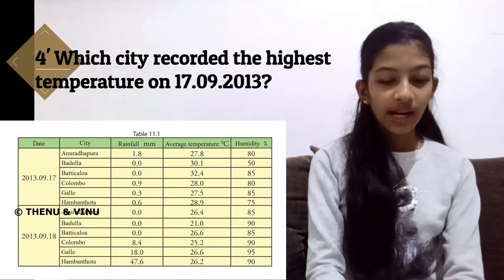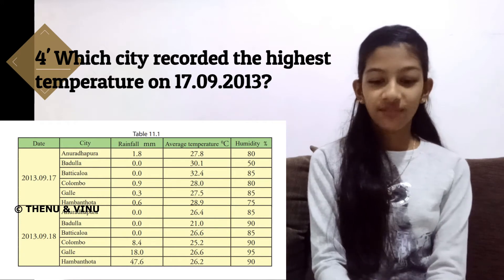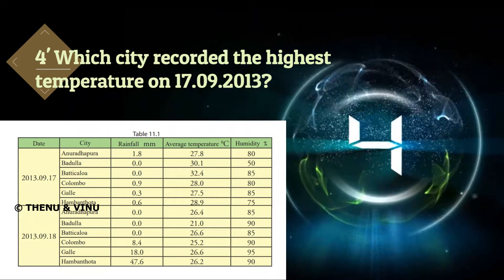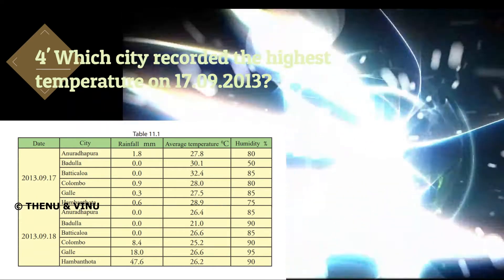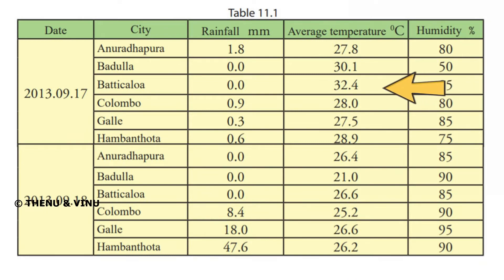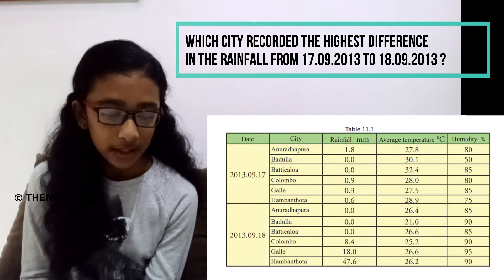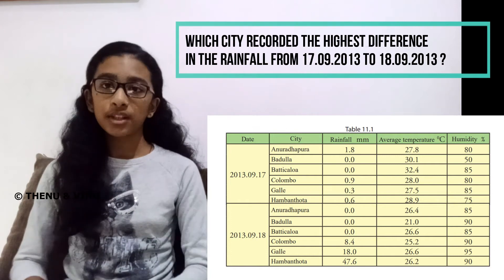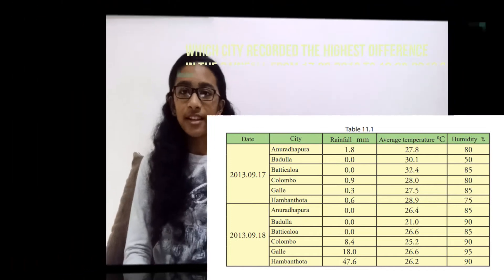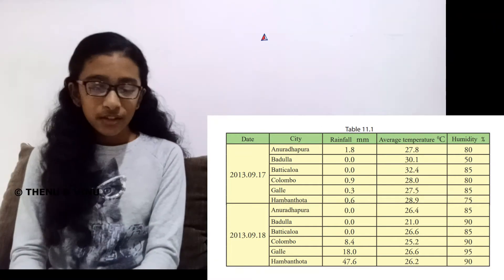The next question is: which city recorded the highest temperature on 17-9-2013? You should answer this question within five seconds. Then, which city recorded the highest increase in rainfall from 17-9-2013 to 18-9-2013? I will give you five seconds to answer. The answer is Hambantota.